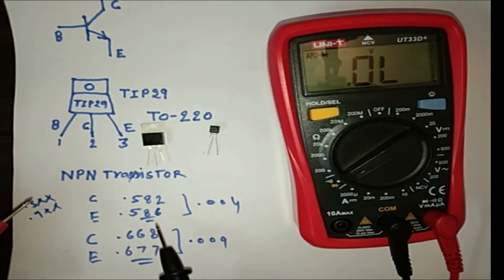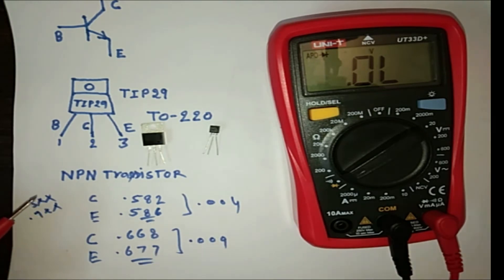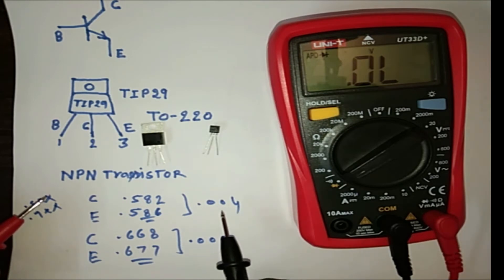And there will be always difference between emitter or collector rating. And emitter rating will be always higher than collector rating. Up to, it may be, here you can see the difference 0.004, it may be 0.005, 0.006, 0.007, 0.008, 0.009, and maximum, minimum difference will be 0.003. So always you will find the difference.